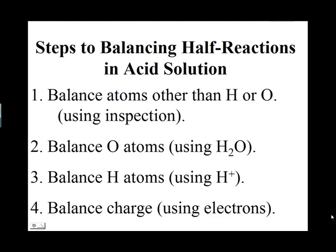Now you need to balance the charge. Determine the net charge on each side, and to the side which is more positive, add an electron for each negative charge required. The net charge on both sides should now be equal. These steps will become much more clear as you go through the following examples.